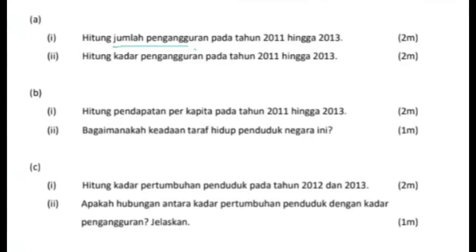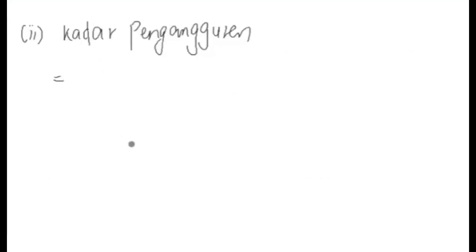Kita sambung soalan yang seterusnya - dua roman. Sekarang dia nak anda hitung kadar pengangguran. Ingat apa maksud kadar itu, juga sama daripada tahun 2011 hingga tahun 2013. Apakah rumus bagi kadar pengangguran? Kadar pengangguran sama dengan jumlah pengangguran bahagi dengan tenaga buruh, darab 100 peratus.